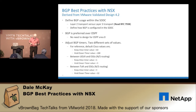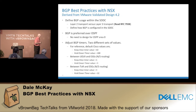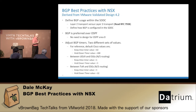First thing you need to do when you're going to use BGP with NSX, particularly in the software defined data center, is make the decision: are you going to have layer two or layer three? If you need additional material to help make that decision, RFC 7938 would be a good one for you to go and read.